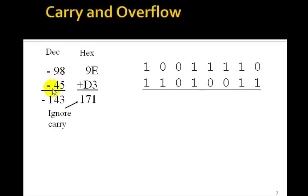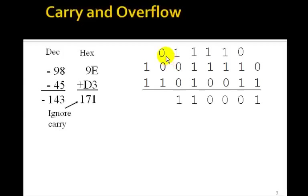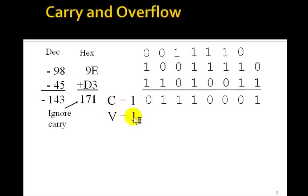Let's try one more example: add negative 98 to negative 45. The correct answer is negative 143. Negative 98 is 9E in hex and negative 45 is D3 in hex. Adding these gives 171, but ignoring the carry. In binary: 0 plus 1 is 1; 1 plus 1 is 0 with a carry; 1 plus 1 is 0 with a carry; 1 plus 1 is 0 with a carry; 1 plus 1 plus 1 is 1 with a carry; 1 plus 0 plus 0 is 1; 0 plus 0 plus 1 is 1; then 1 plus 1 is 0 with a carry — so the carry bit is set to 1 and the overflow bit is set to 1.